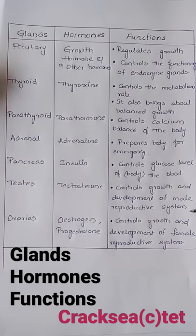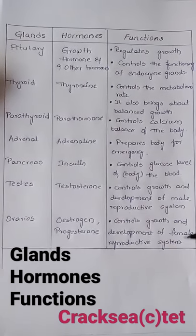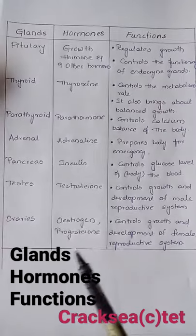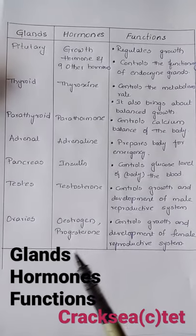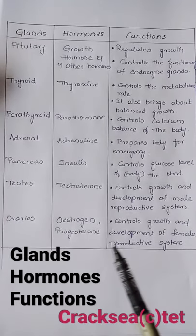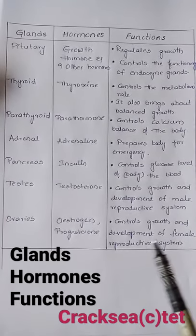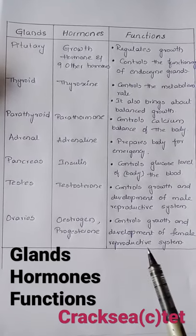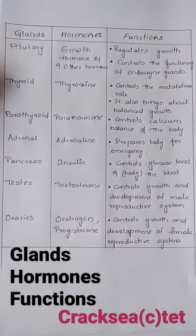the male reproductive system. Last one: ovaries. It secretes estrogen and progesterone, which controls the growth and development of the female reproductive system. Thank you.